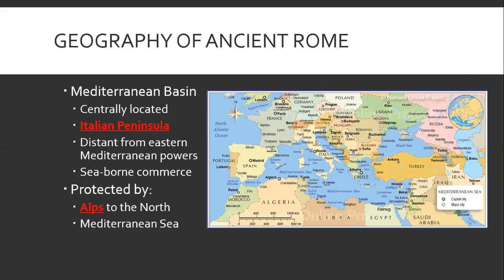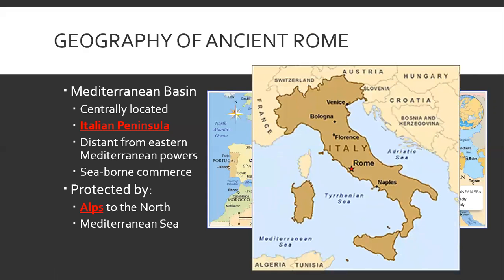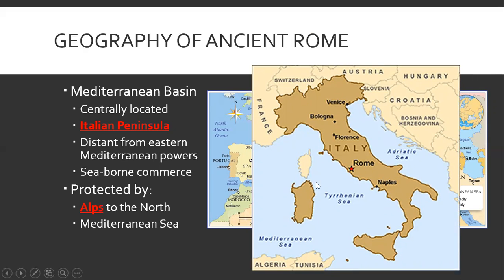The geography, as we talked about a little bit already: centrally located in the Mediterranean Sea on the Italian peninsula. It's pretty distant from these eastern powers, so you're not going to see any Persian interference, or Greek interference for the most part, or Egyptian interference. They kind of are their own thing over here. They have a lot of seaborne commerce with all this coastline — they are going to be able to do a lot of trade going eastward and westward. All this coastline is also pretty good for protection, because if there's something coming they're going to find out about it quickly. And in the north, on this border here, that is the Alps — a mountain system in Central Europe that provides very good protection from any type of land invasions from the north. That is going to be a huge part of their security.